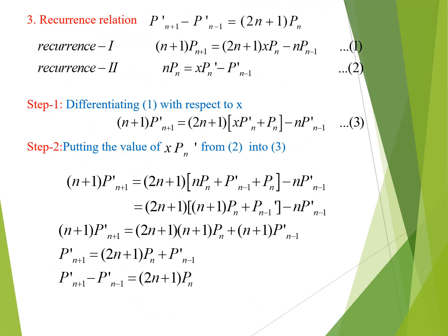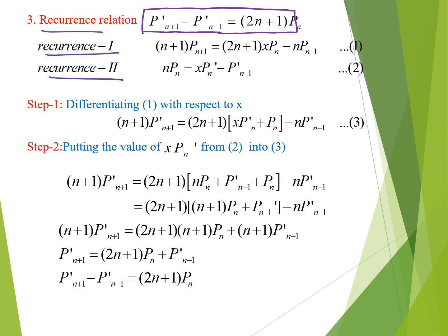Now for the third recurrence relation: P_{n+1}'(x) minus P_{n-1}'(x) = (2n+1) P_n(x). To prove this, we use recurrence relations 1 and 2.